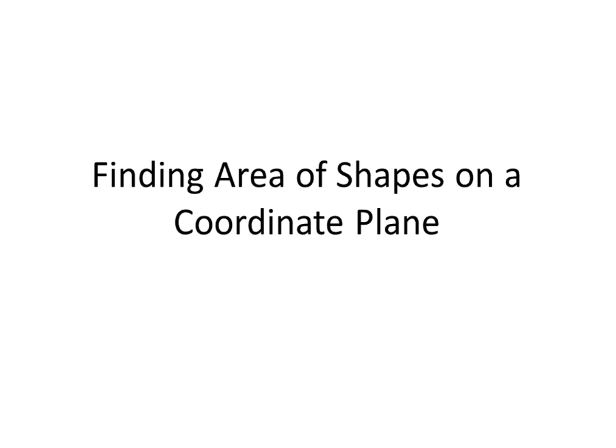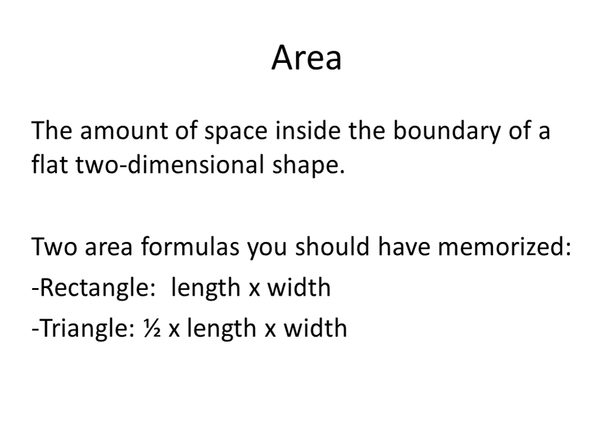In this video, we're going to be finding the area of shapes on a coordinate plane. Area is the amount of space inside the boundary of a flat, two-dimensional shape. Unlike perimeter, which is the total distance around the shape, the area is the amount of space inside of the shape.